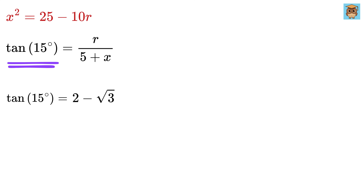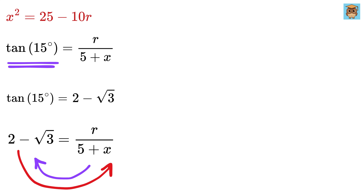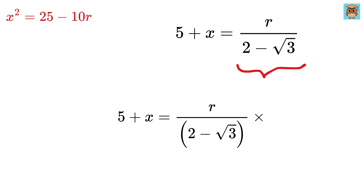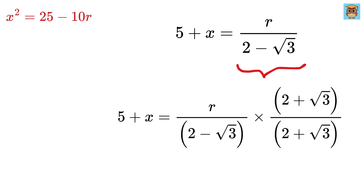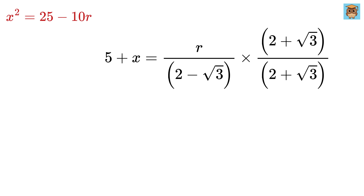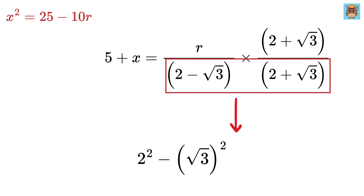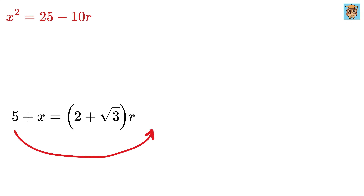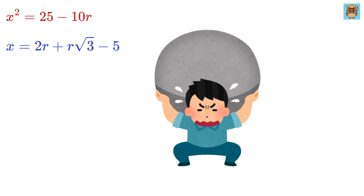Now substitute to get 2 minus root 3 equals r over (5 plus x). Rearranging: 5 plus x equals r over (2 minus root 3). Rationalizing the right side by multiplying numerator and denominator by the conjugate (2 plus root 3): the numerator becomes r(2 plus root 3), and the denominator becomes 2 squared minus (root 3) squared, which is 4 minus 3, equaling 1. So 5 plus x equals r(2 plus root 3). Taking 5 to the other side: x equals 2r plus r root 3 minus 5.